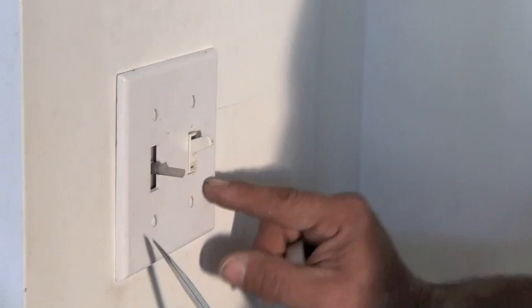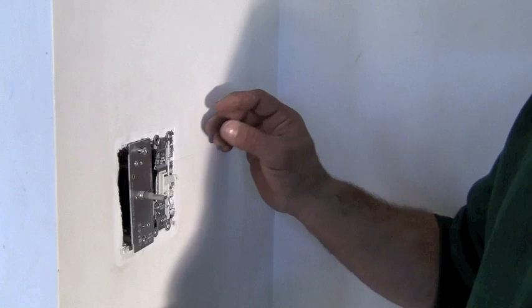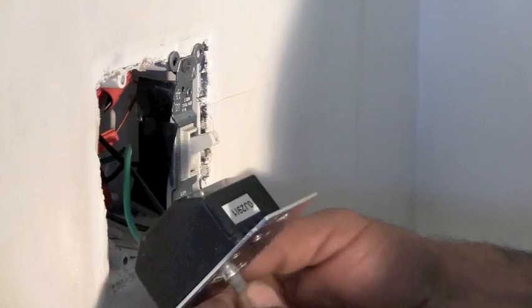I'm going to remove the rest of this plate by removing these screws so we can get to the switches. All right, just finishing removing the rest of these screws for the old switch there and here's our dimmer switch.